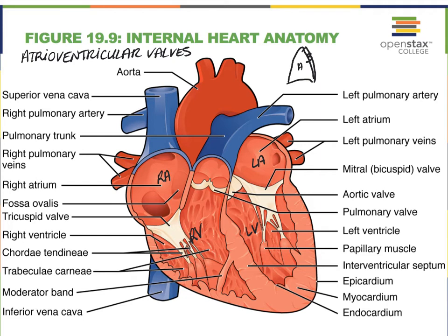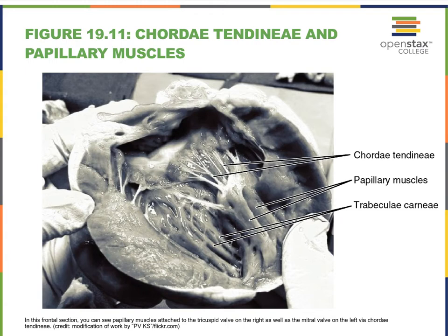Yet another structure to point out are the trabeculae carneae, literally meaning the network of the flesh. What you see here is this fleshy muscle of the heart, particularly in the ventricles — I'm pointing to it right here. We see that network of muscle tissue in the ventricles. That is what we refer to as the trabeculae carneae. Here we see a really beautiful photo illustrating those trabeculae carneae, as well as the nipple-like papillary muscles that hold on to the chordae tendineae, which in turn hold on to the atrioventricular valves.